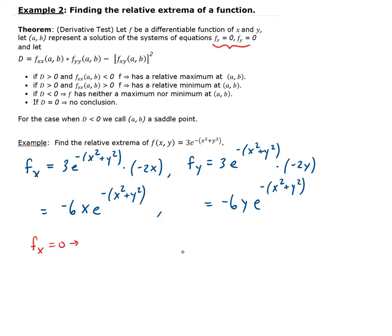The only way the first partial equals zero is if x = 0. By the same reasoning, since e^(-(x² + y²)) can never be zero, y must also be zero for the second partial to equal zero. So we found our critical point. Now we need to find the second-order partials before substituting into D.